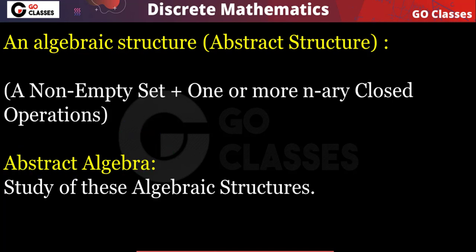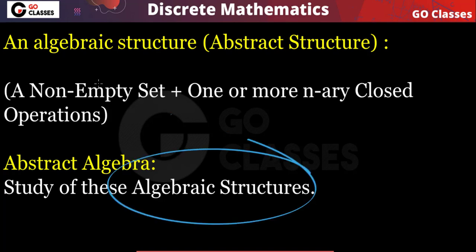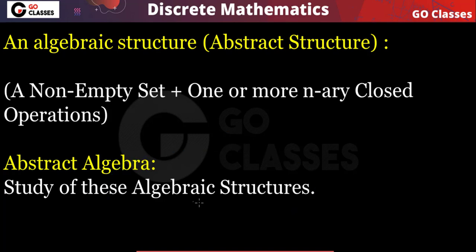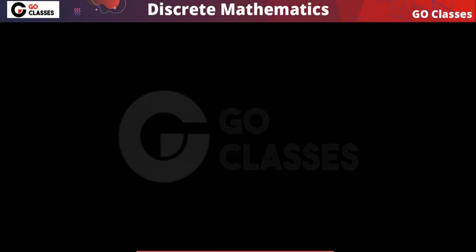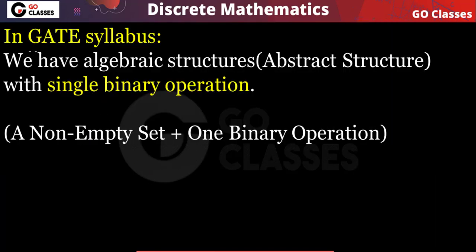Now, what is abstract algebra? Abstract algebra is the study of these algebraic structures. All the algebraic structures we have discussed — the study of those algebraic structures is called abstract algebra. But in the GATE syllabus we only have those algebraic structures with one binary operation — no ternary operations and no more than one operation.